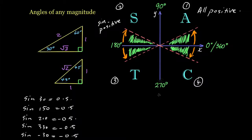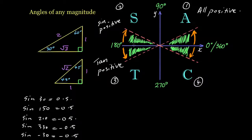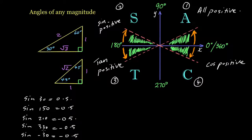From 180 to 270, we have a T — tan is positive here. Sine 210 is in this third quadrant and our answer was negative. In the fourth quadrant we have C, meaning cos is positive, and sine 330 is in the fourth quadrant, which also gave a negative result.